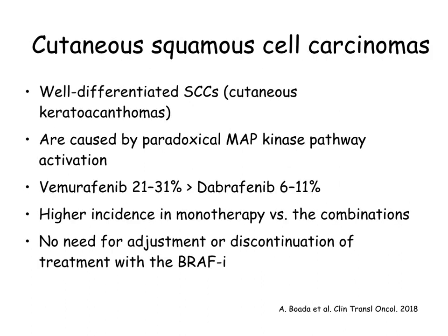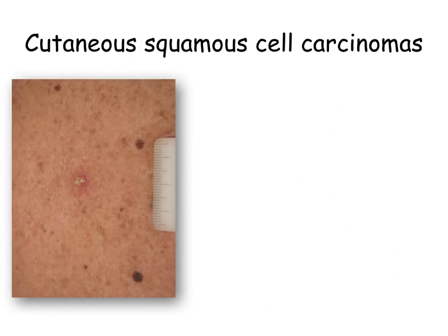The vast majority of squamous cell carcinomas are well differentiated, mostly of keratoacanthoma type. They are more common among patients receiving Vemurafenib and less common in those receiving combinations with MEK inhibitors. They usually present as a crateriform papule or nodule with a central keratinous or hemorrhagic mass.